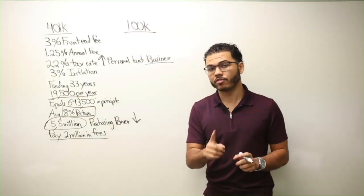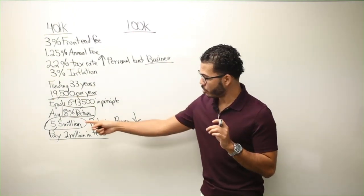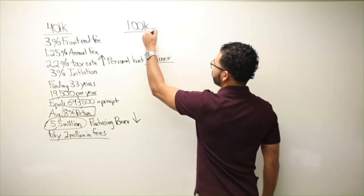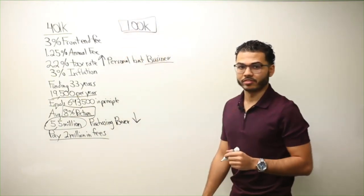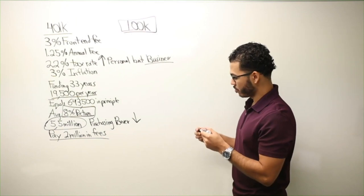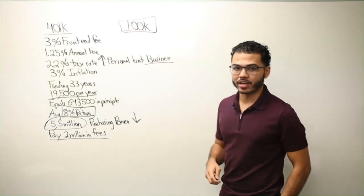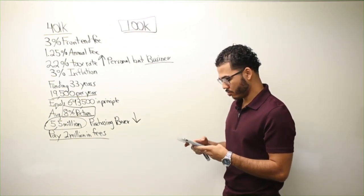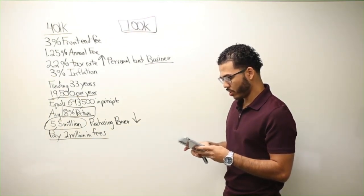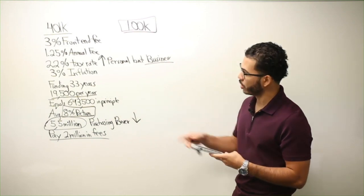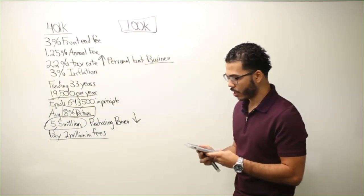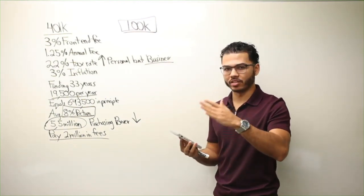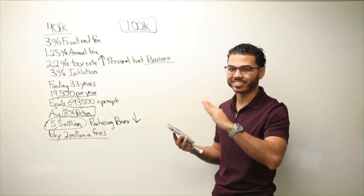Because now you have to factor in when you start to withdraw the money, how much are you going to withdraw per year? Are you going to do this at age 59 and a half? How long is that going to last you? So 5.5 million minus 2 million in fees alone. And then you have to minus the value of the dollar from 3.5 million, the inflation and taxes.